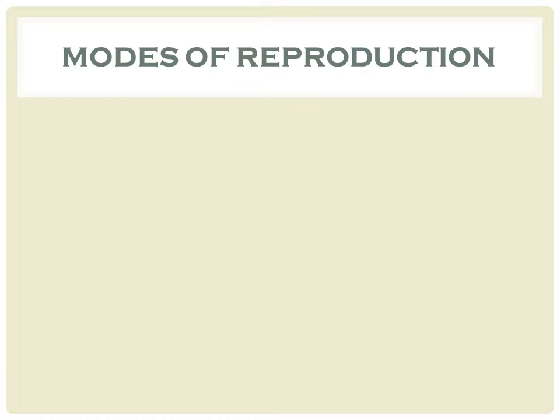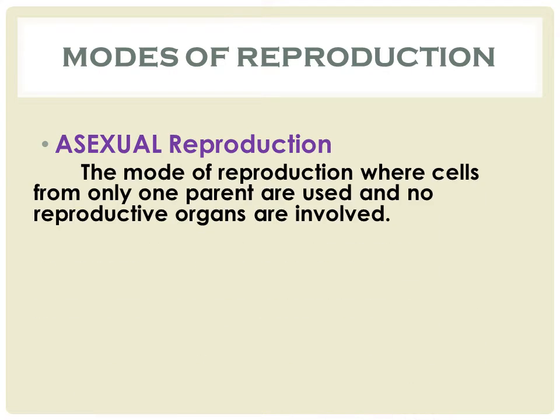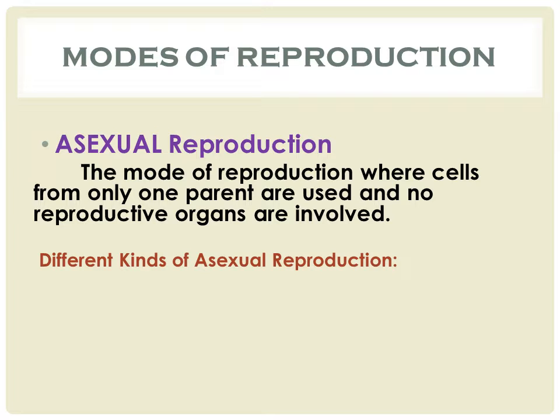The other main mode of reproduction is asexual. It is the formation of a new organism without using sexed cells or gametes. Different kinds of asexual reproduction include budding, fragmentation, regeneration, and binary fission.